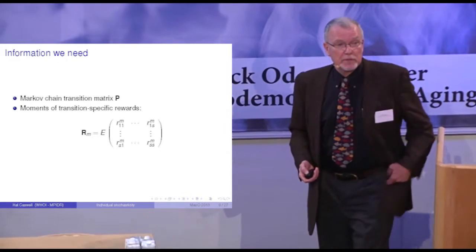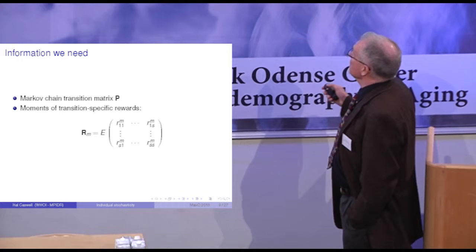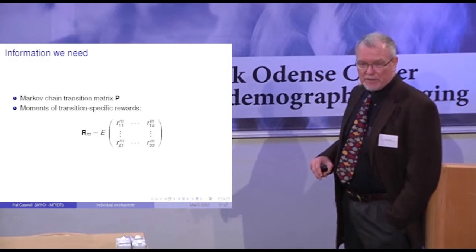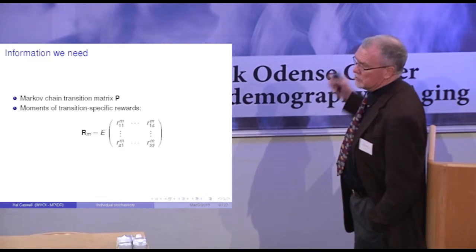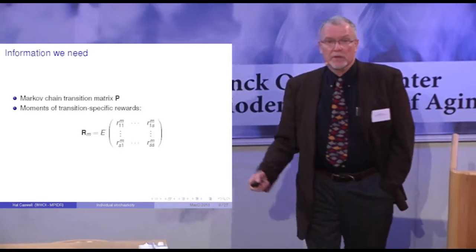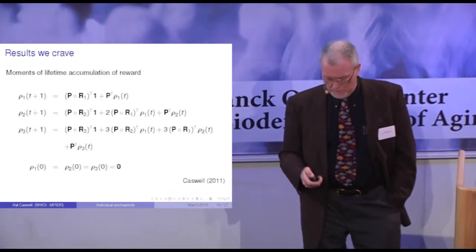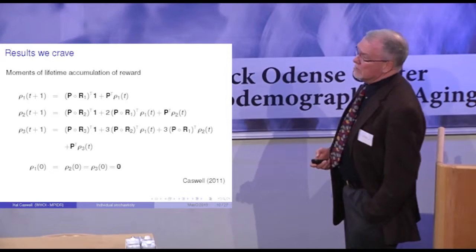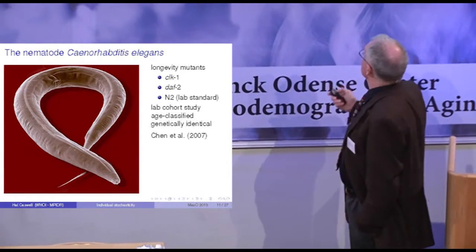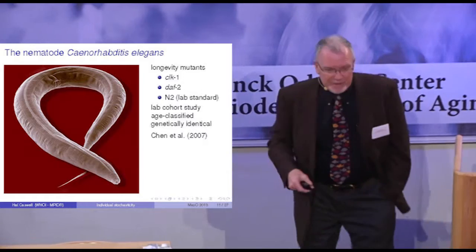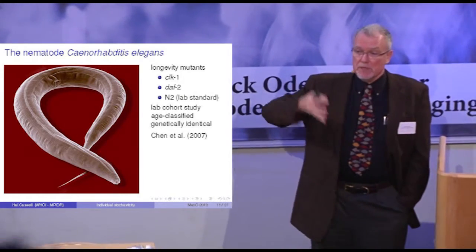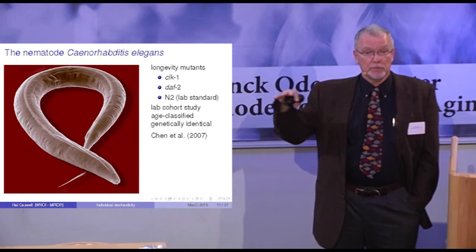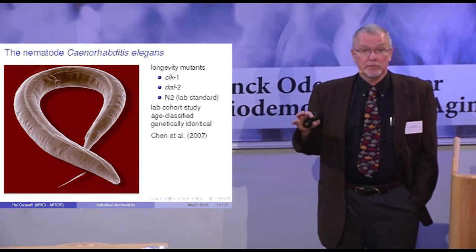What you need to calculate this is the transition matrix that has the demographic rates in it, and you need to know the moments — the mean, the variance, the skewness, and so on — of the rewards that you get for each move you make in your life cycle. Then you do a bunch of stuff, and you get the moments — the mean, the variance, the skewness — of the lifetime accumulated rewards. So let's look at reproduction.